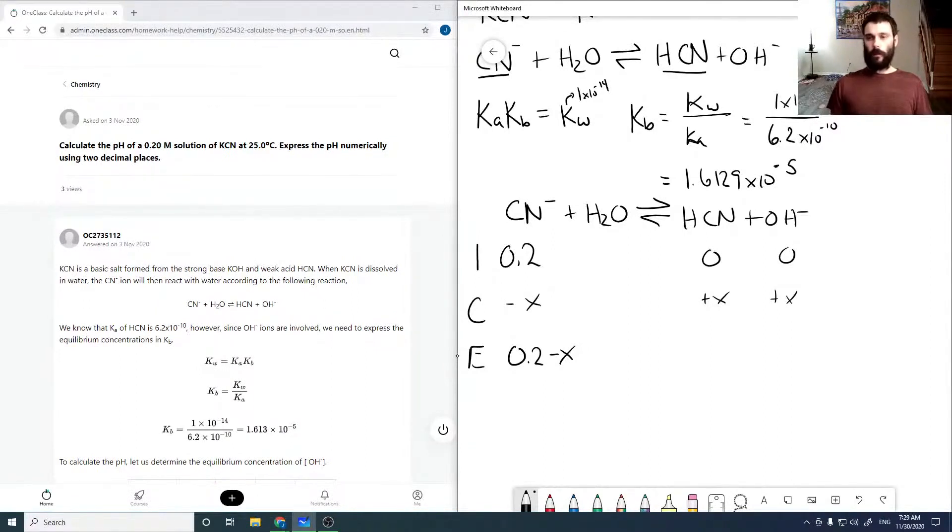Our equilibrium is 0.2 minus x. They're all one-to-one in the chemical expression, that's why it's just minus x, plus x, and plus x. If there were any stoichiometric coefficients, these would be multiplied by those relevant factors. These are our equilibrium values.